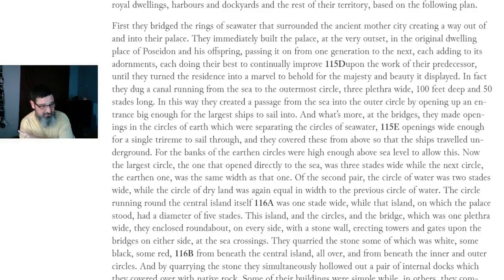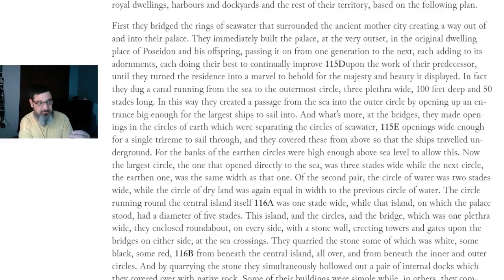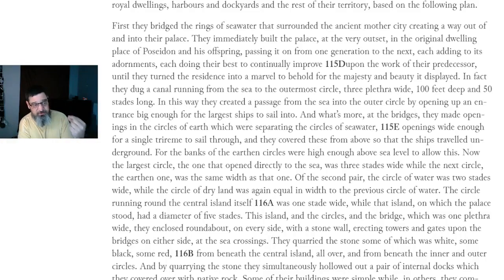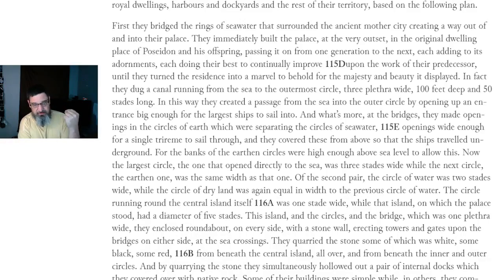They dug a canal running from the sea to the outermost circle, three plethora — 300 feet — wide, 100 feet deep, and 50 stades long. In this way, they created a passage from the sea into the outer circle by opening up an entrance big enough for the largest ships to sail through. At the bridges, they made openings in the circles of earth separating the circles of seawater, wide enough for a single trireme to sail through, and they covered these from above so that ships traveled underground, for the banks of the earthen circles were high enough above sea level to allow this.